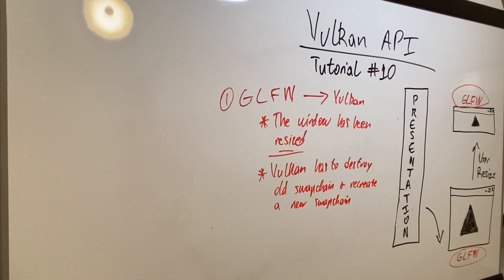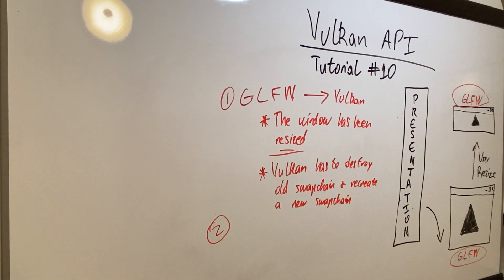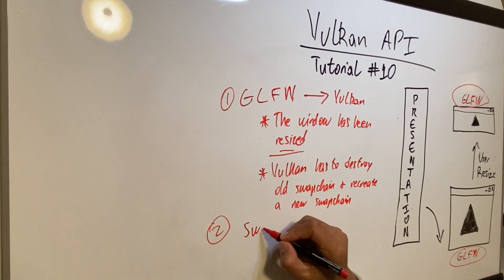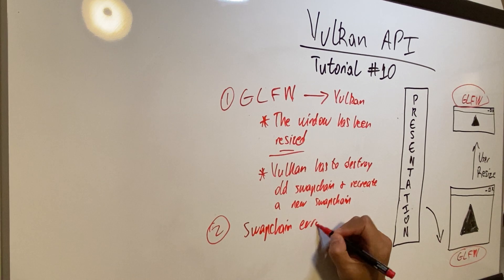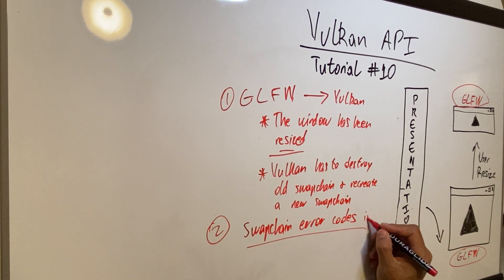Now there may also be situations where something is going on with Vulkan, and the Vulkan API will give you codes to say there's something wrong with the swap chain images. Your application has to manage that. So this is more dealing with the swap chain side of the equation where there's something going on with the swap chain and you as the application developer has to be aware of it and has to be able to handle it. We'll just call this swap chain error codes in Vulkan.